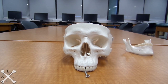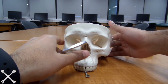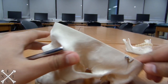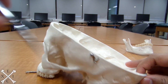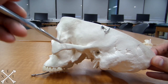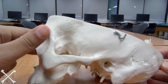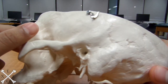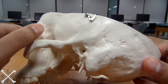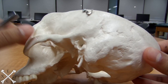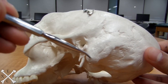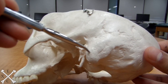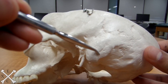We'll be looking at the temporal portion of the cranial bone. This right here is your temporal portion. The first structure we'll be looking at is your mastoid process, which is right there.